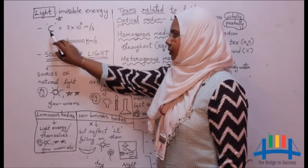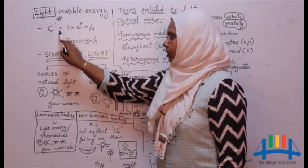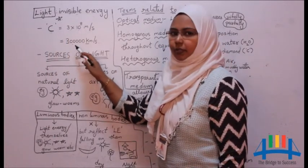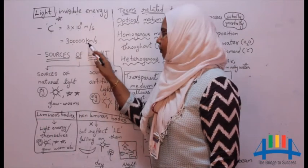The speed of light, denoted with letter C, is equal to 3 into 10 to the power of 8 meters per second, or you can say 3 lakhs kilometers per second.